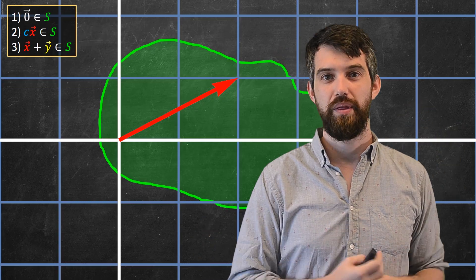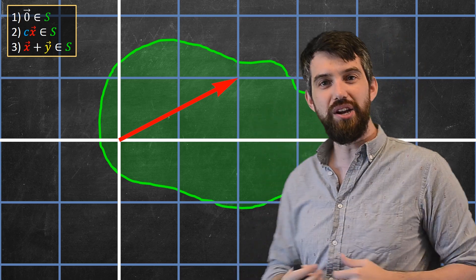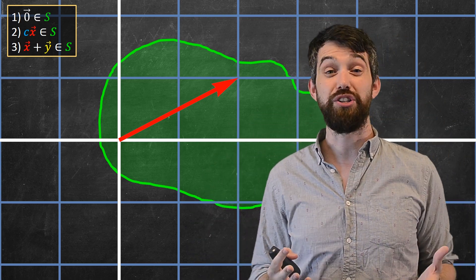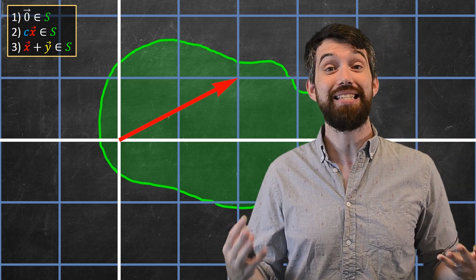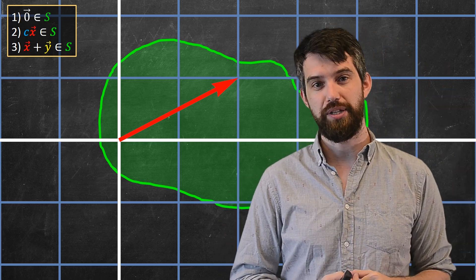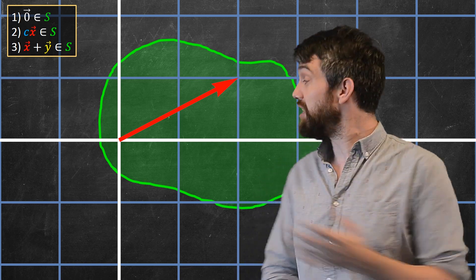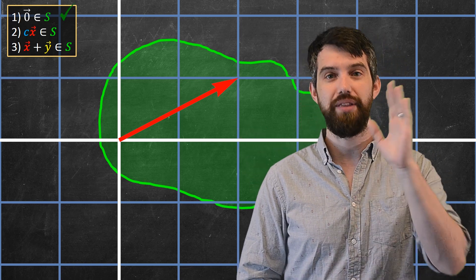Okay, let's see a few different examples. I've got some vector here. It is living inside of this green subset. Now the question is, is this subset a subspace? As in, does it obey our three different properties? Well, let's see. First of all, the zero vector does indeed live in this thing. We have this zero vector. So yes, first property is checked.